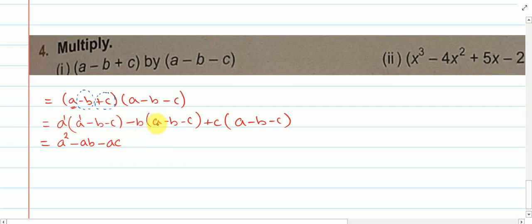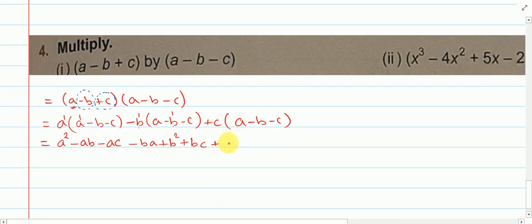Now minus b multiplied by plus a gives minus ba. Here minus and minus — minus into minus gives plus — and b to the power 1 times b to the power 1, base is same, power will be added, so we get b square. Then minus into minus gives plus bc. Then plus c multiplied by plus a gives ca. Plus into minus gives minus: c into b gives cb. Then plus into minus: minus c into c gives minus c square.